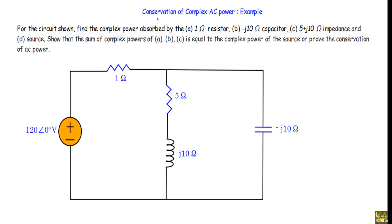In this video I will show you an AC circuit example demonstrating conservation of complex AC power. For the circuit shown, find the complex power absorbed by the one ohm resistor, the minus j10 ohm capacitor, and the 5 plus j10 ohm impedance. This is the one ohm resistor, this is the capacitor with capacitive reactance minus j10 ohm, and this is the branch with impedance 5 plus j10.